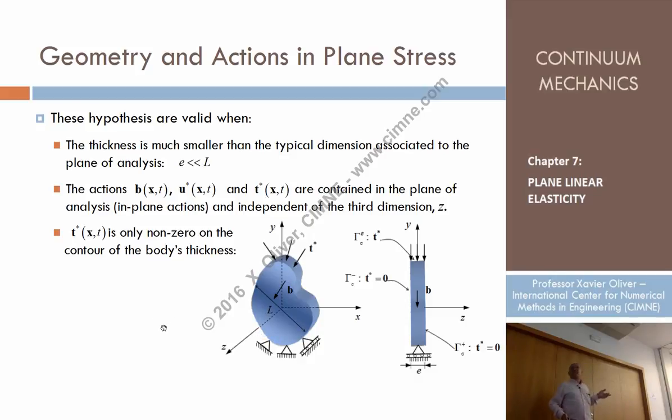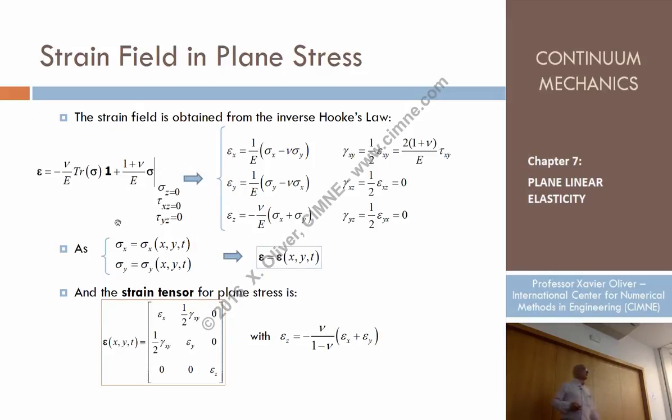And that thickness being much, much smaller than the other dimensions. That's typically the case. In that case we reasonably assume, it is an assumption, that's not an exact theory. It's not exact, it's just an approximation to the reality which simplifies very much the things. Look that even the constrained displacements, everything which forms part of gamma sigma gamma u is in the plane of analysis. The surfaces of the plane are free of any actions in terms of stresses or constraints.